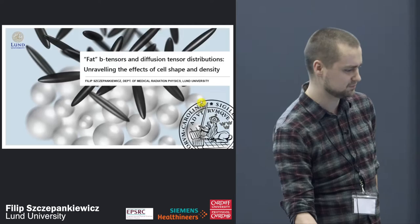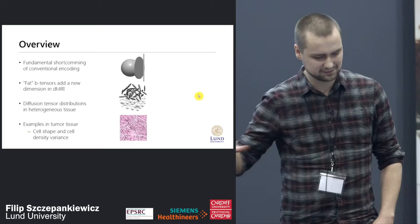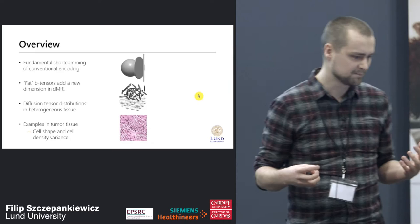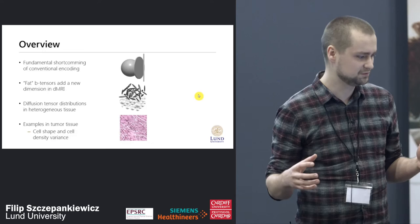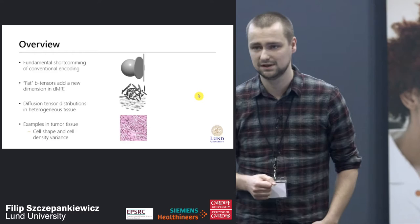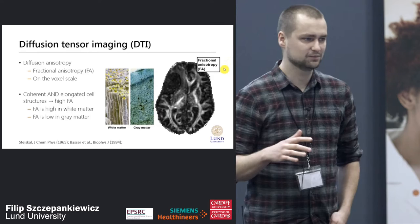G'day everybody, I'm super happy to be here, super honored, slightly perplexed but mostly honored. I'm going to talk to you about fat B tensors — they have been mentioned a little bit before, diffusion tensor distributions not so much. For an overview, I'm just going to lay the background, which might sound like some of the stuff we've already spoken about, but I'll cover the fundamental shortcomings of conventional diffusion encoding, what fat B tensors are, how they can access a new dimension of diffusion MRI, and some examples from tumor tissue from in vivo measurements.